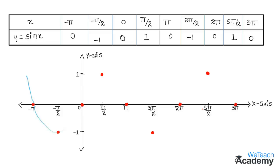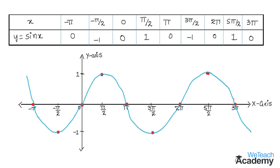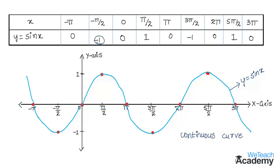By joining all these points we get the graph, and this curve is called y = sin x. Note the following: the curve of sin x is a continuous curve; the minimum value is -1 and the maximum value is 1; the sin x curve passes through the origin; and the curve repeats with an interval of 2π. This was a basic introduction to the graph of the trigonometric function sin x.